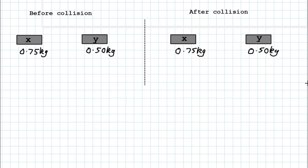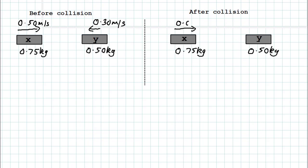Next, fill in the velocities. Vehicle X is moving initially with a velocity of 0.50 meters per second to the right, and vehicle Y is moving with 0.30 meters per second to the left. After the collision, vehicle X is moving in the same direction (positive), with a velocity of 0.02 meters per second. For vehicle Y after the collision, we don't know its direction, so we assign it a velocity of v and trust the mathematics.